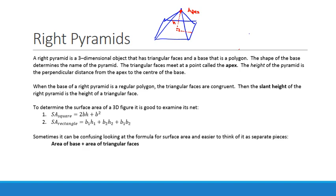When the base of the right pyramid is a regular polygon, the triangular faces are congruent. Then the slant height of the right pyramid is the height of the triangular face. My slant height is right there. It comes from the middle of your triangular face on the bottom there up to the apex.